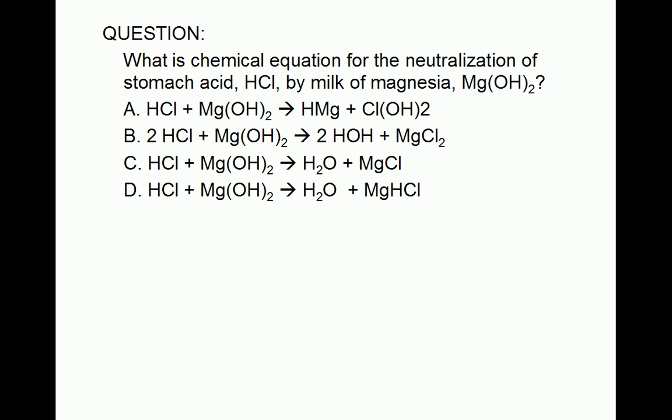It's relatively simple to predict the products of a reaction between an acid and a base. If the base is a metal hydroxide or a metal oxide, the product of the reaction is always water and a salt.